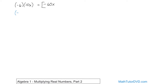What if we had negative 5 times negative 5x? Well, 5 times 5 is 25, and these signs are both negative. Negative times negative gives you positive, so it's going to be positive 25. Don't forget the x because it's still being multiplied as well.